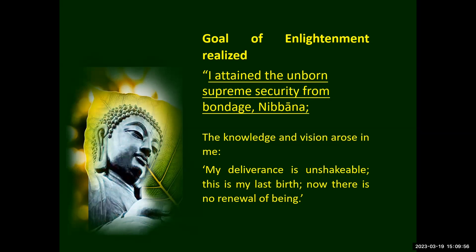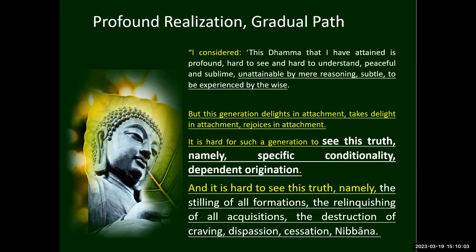Because of that realization, the Buddha said, 'This is my last birth. Now there is no renewal of being.' This realization is not trivial. The Buddha mentioned that the Dhamma he attained is profound, hard to see and hard to understand, peaceful and sublime, unattainable by mere reasoning, subtle, to be experienced by the wise. The Noble Eightfold Path is a way the Buddha simplified for us to understand, because what he realized is not attainable by logic alone — it is deeper than that.